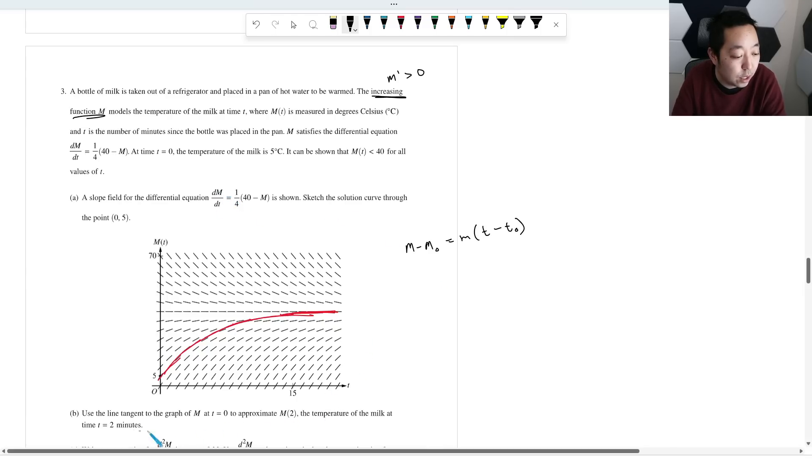Now, what is the point? We're going to use at T equals zero. So at T equals zero, we want to know the point first, right? So at T equals zero, the temperature is five degrees Celsius, right? So that means the equation is going to be M minus five equals the slope times T minus zero. And the slope is the derivative at the point zero comma five. So you're going to plug that point in. So that's going to be from our differential equation, one fourth times 40 minus 5.